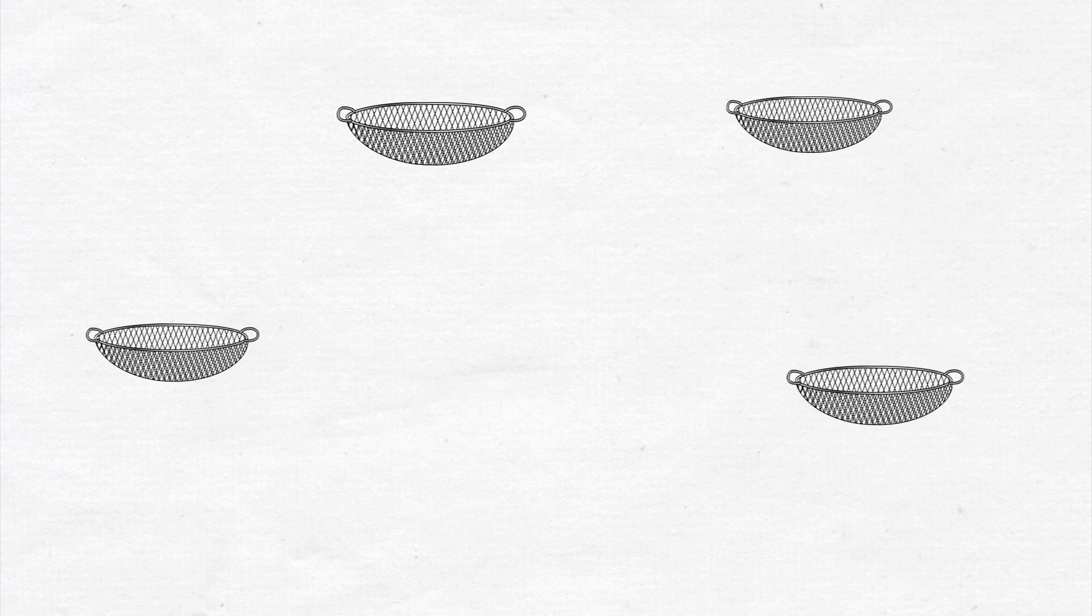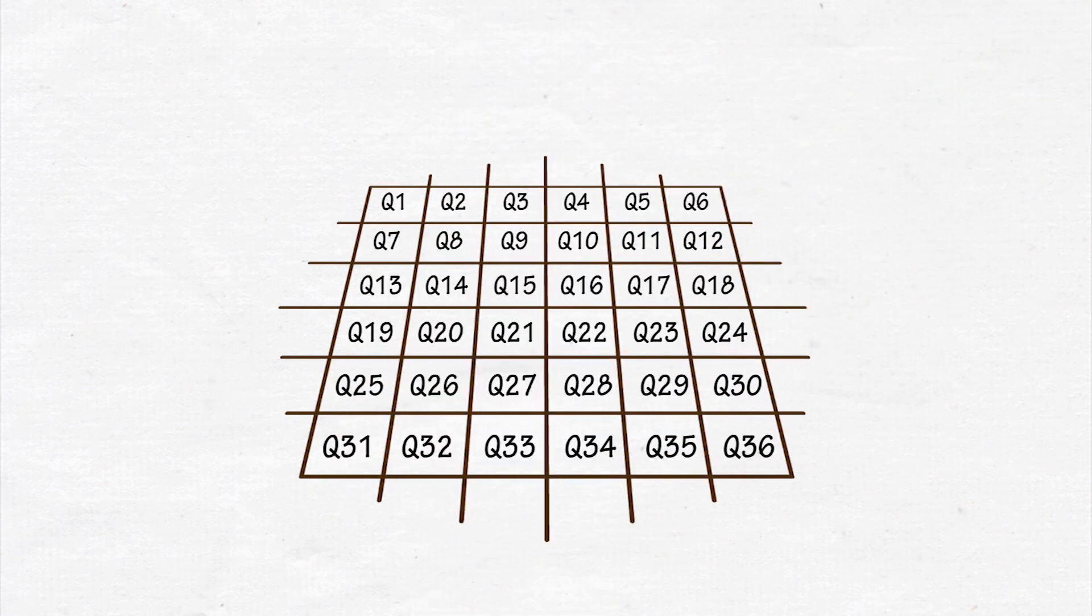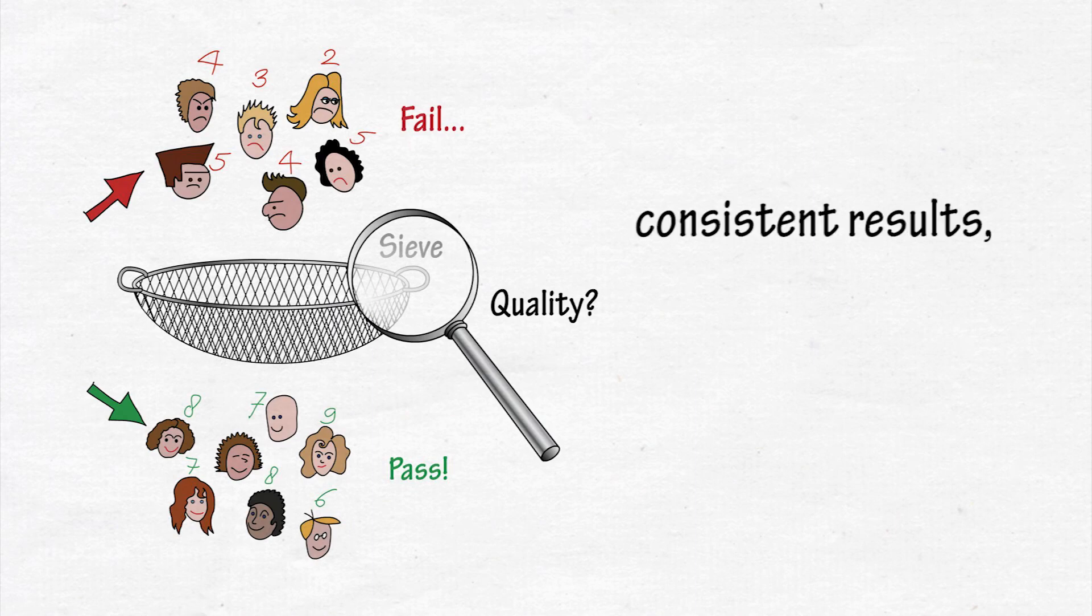To summarize, to investigate the reliability of an exam, you can perform a calculation using Kronbach's alpha or KR20. To help ensure its validity, you should make a test matrix and check your questions carefully, so that you know that your sieve yields consistent results and that the holes are of the right size.